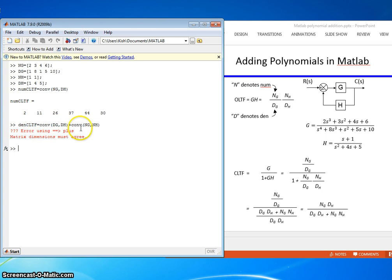So, to add polynomials, they have to be the same dimension, because in MATLAB, you're adding two vectors, and the vectors have to be the same size.